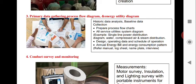Next is the annual energy bill and energy consumption pattern — for example, energy consumption at 10 o'clock, 5 o'clock, or 8 o'clock — recording how energy consumption varies throughout the day.